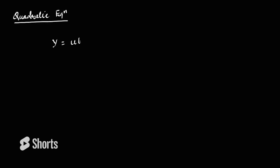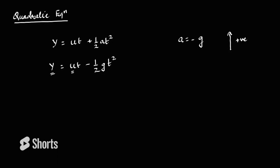So you must have seen quadratic equations multiple times in physics. For example, in vertical motion, the quadratic equation can be written as y = ut + ½at², where a is taken as minus g if we take the upward direction as positive. Therefore, the equation becomes y = ut − ½gt², where u is the initial velocity and y is the position of the particle along the vertical direction. Rearranging this, it can be written as ½gt² − ut + y = 0.